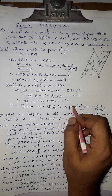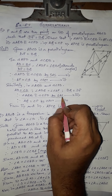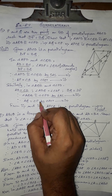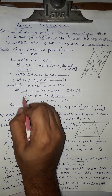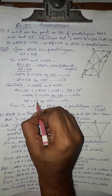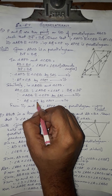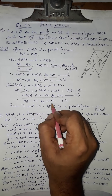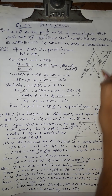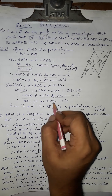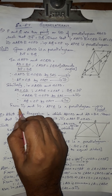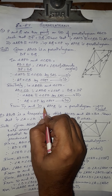By SAS, triangles AQB and CPD are congruent — that is number three. When congruent, by CPCT we can say AQ equals CP, since AQ is a side of the first triangle and CP is the corresponding part of the other. That is number four.